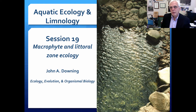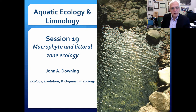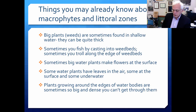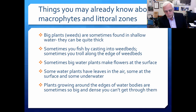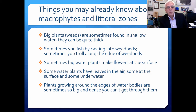Session 18 looked at the evolution, development, and biodiversity of aquatic macrophytes, and the next session will discuss wetlands and wetland types. We've been developing a theme talking about various biological organisms within aquatic ecosystems, spending three sessions on rooted plants in shallow waters. If you've been around lakes and ponds, you know that big plants — what you may call weeds, though I'd encourage you not to — are sometimes found in shallow water. They can be really quite thick and abundant, or very sparse, with different abundances in different environments.